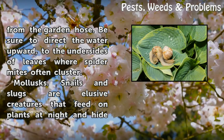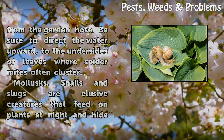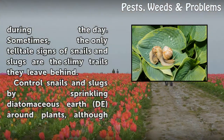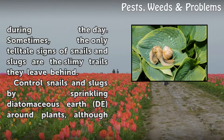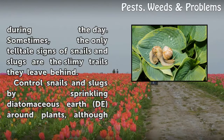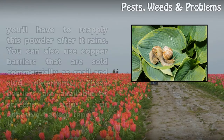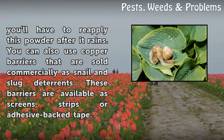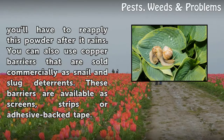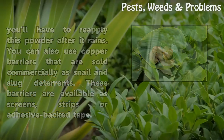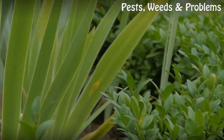Mollusks — snails and slugs: snails and slugs are elusive creatures that feed on plants at night and hide during the day. Sometimes the only telltale signs are the slimy trails they leave behind. Control snails and slugs by sprinkling diatomaceous earth around plants, though you'll need to reapply after rain. You can also use copper barriers — sold commercially as screens, strips, or adhesive-back tape — as snail and slug deterrents.